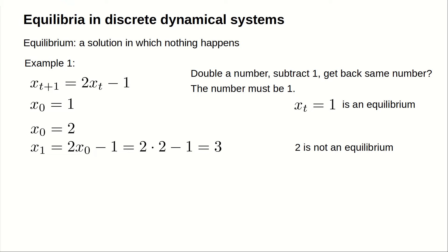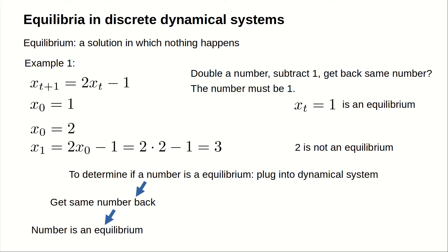To determine if a number is an equilibrium, just plug it into the dynamical system. If you get the same number back, it is an equilibrium. If you get a different number back, it is not an equilibrium.